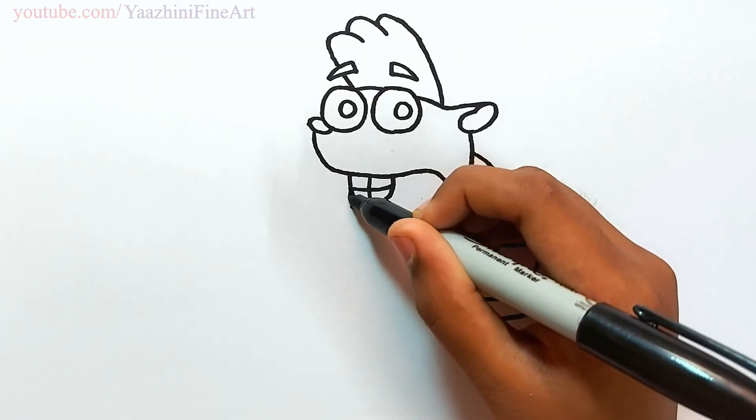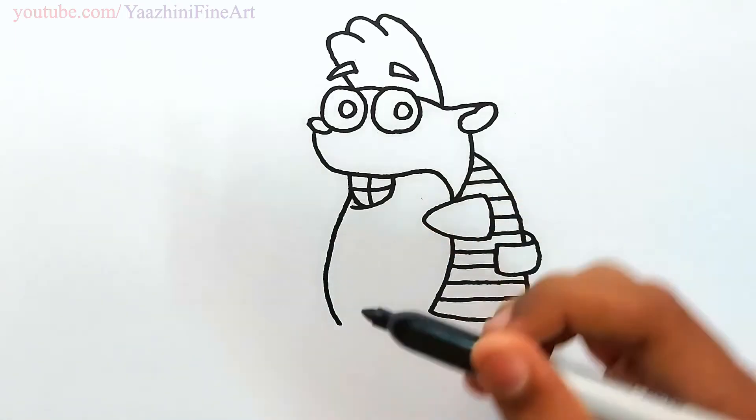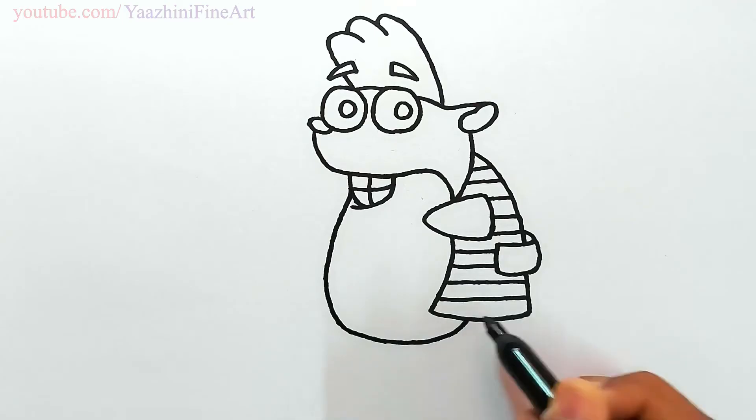Draw his body. Come down, curve it, go horizontally, and then join.